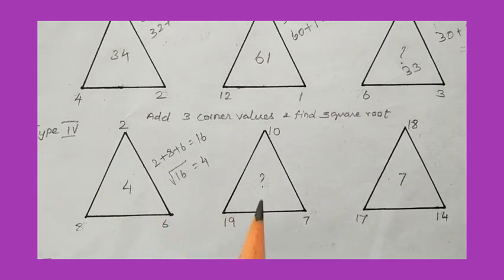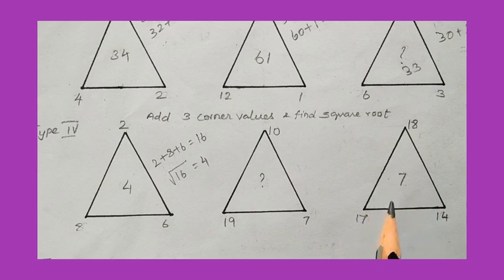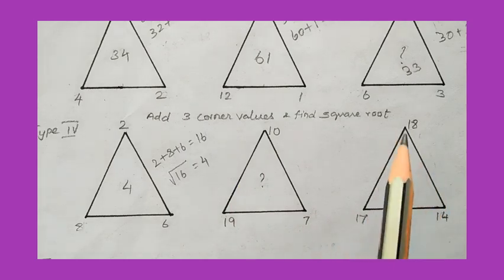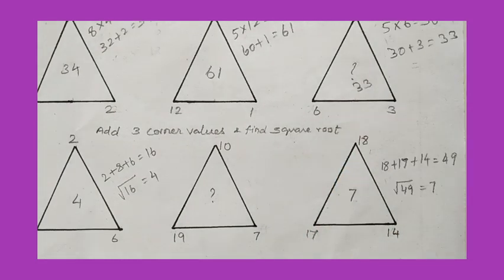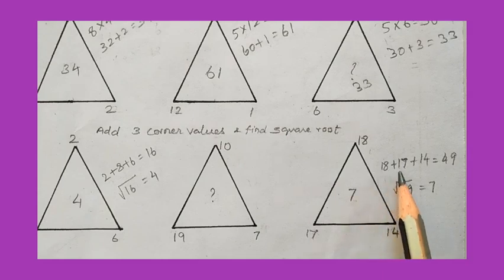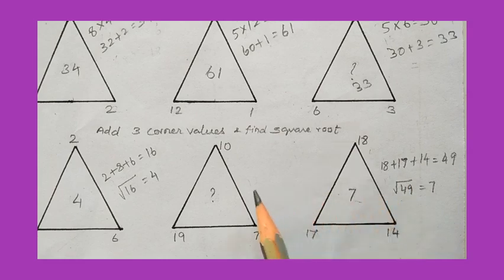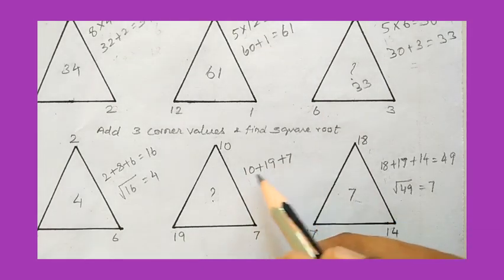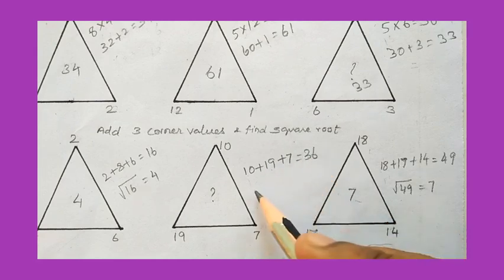In this problem the second triangle's inside value is what we need to find, but the third triangle is fully given. We compare the first and third triangles to confirm the logic. For the third triangle: 18 plus 17 plus 14 equals 49, and the square root of 49 is 7. Confirmed. Now for the middle triangle: 10 plus 19 plus 7 equals 36.